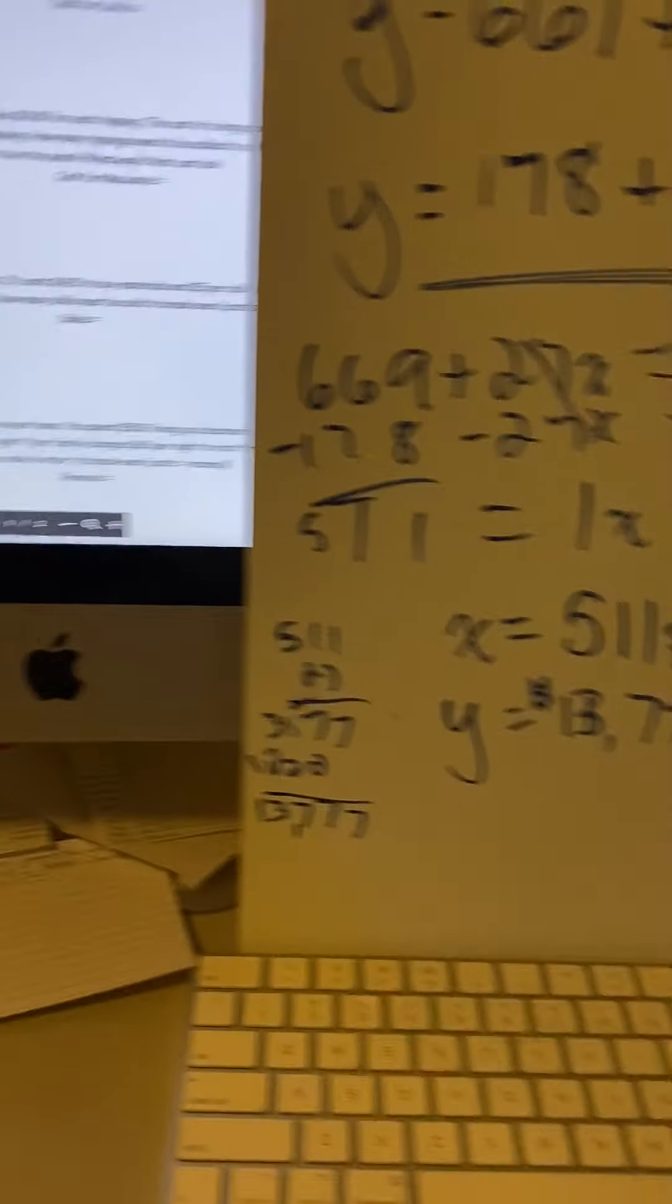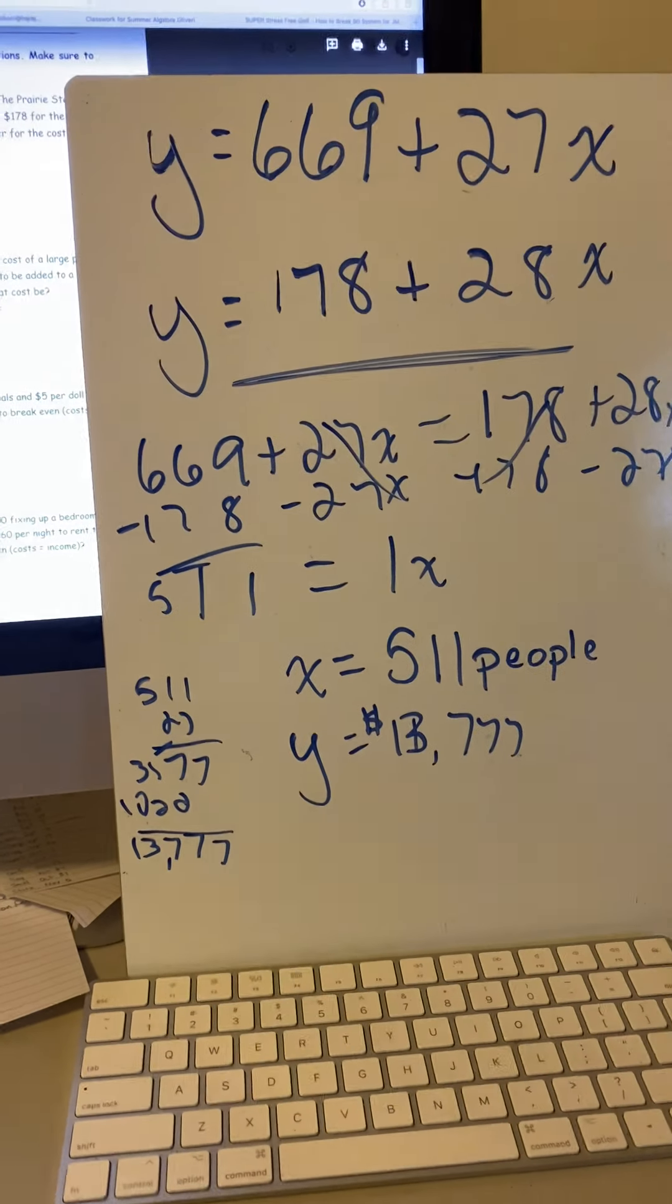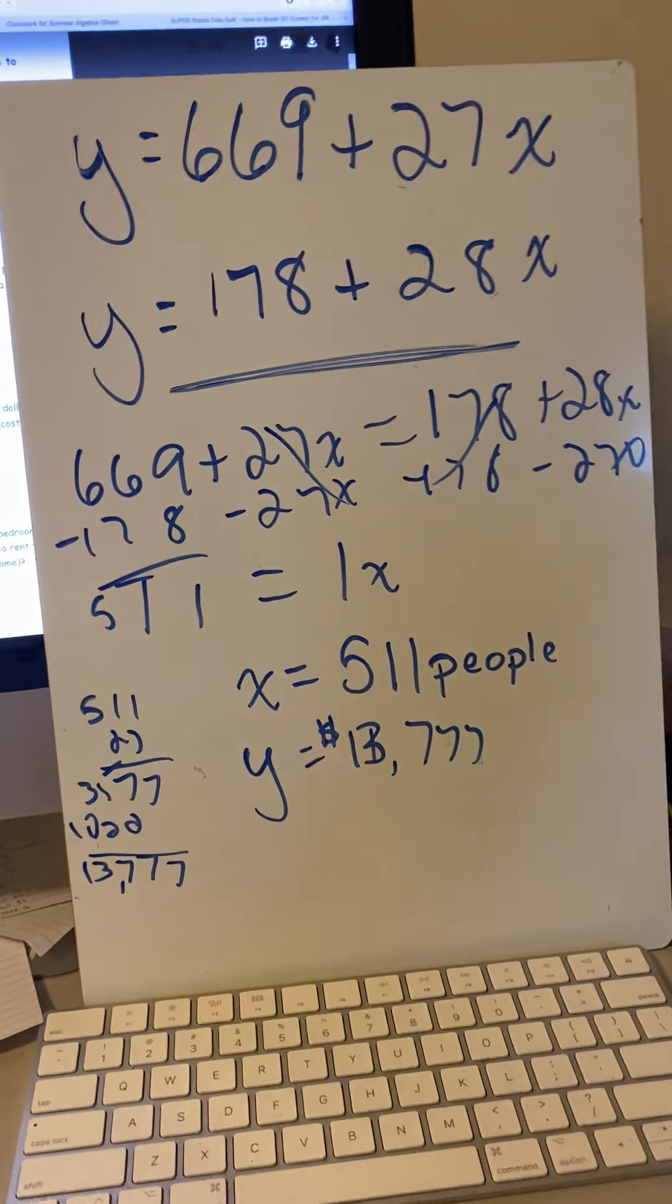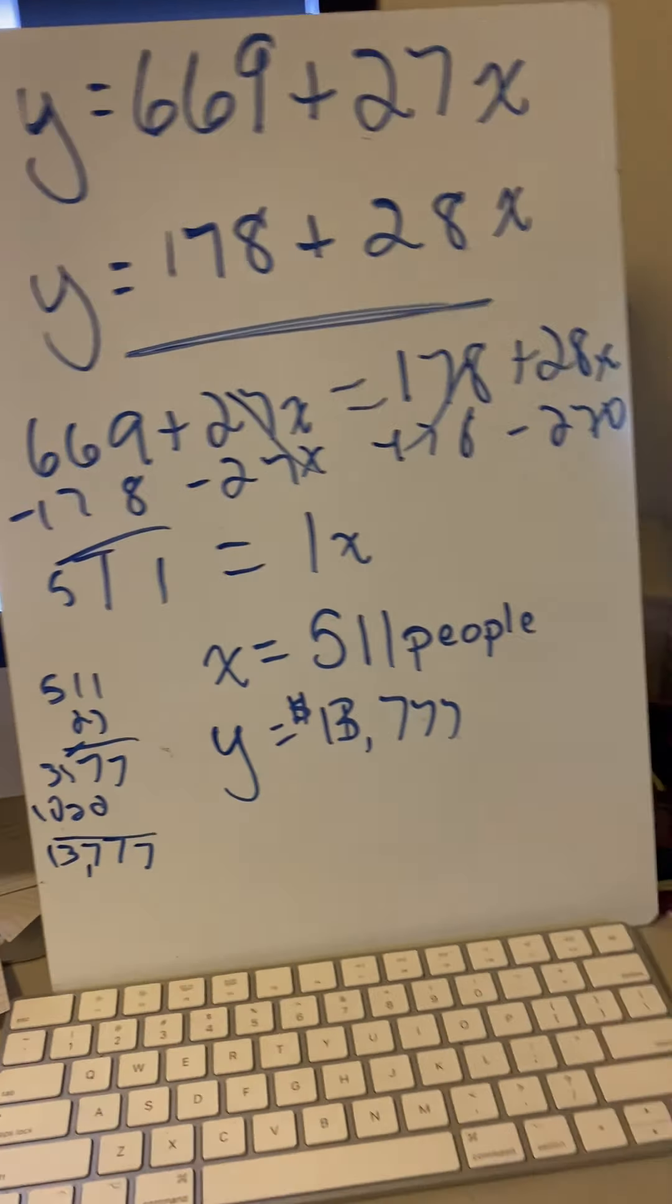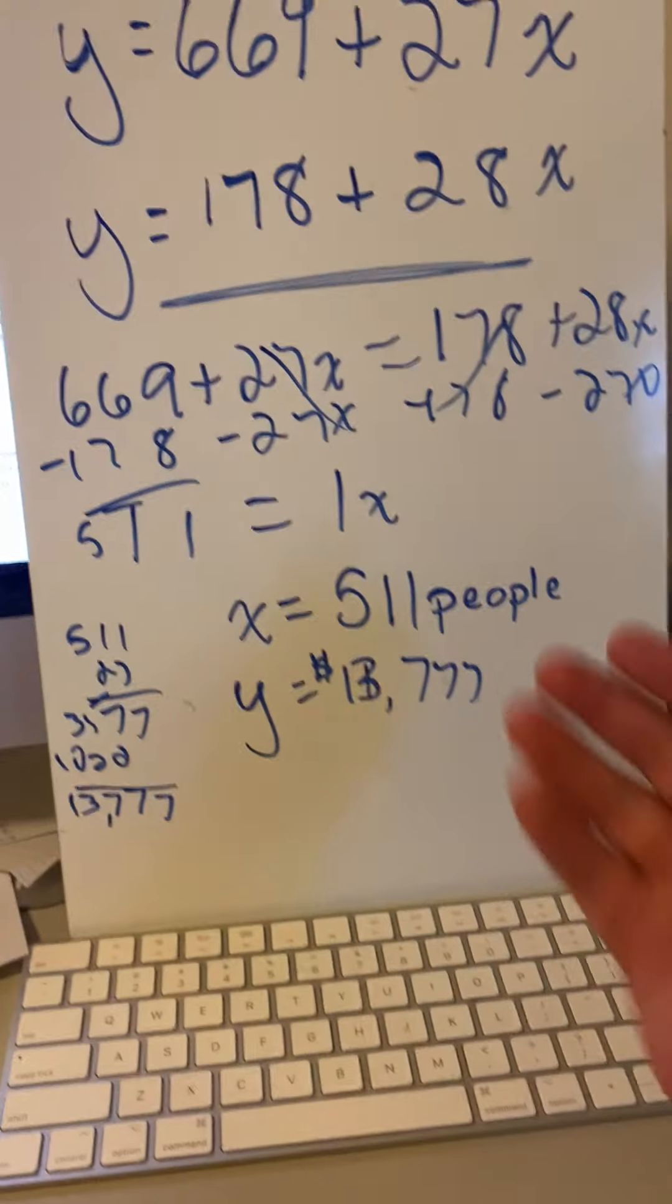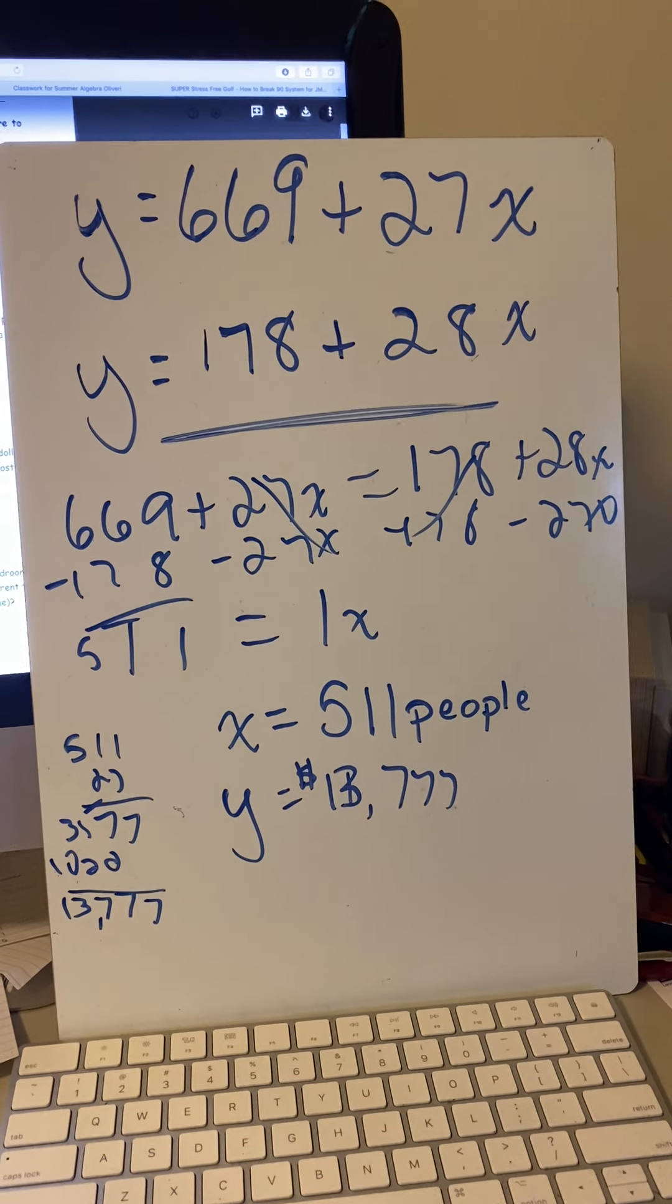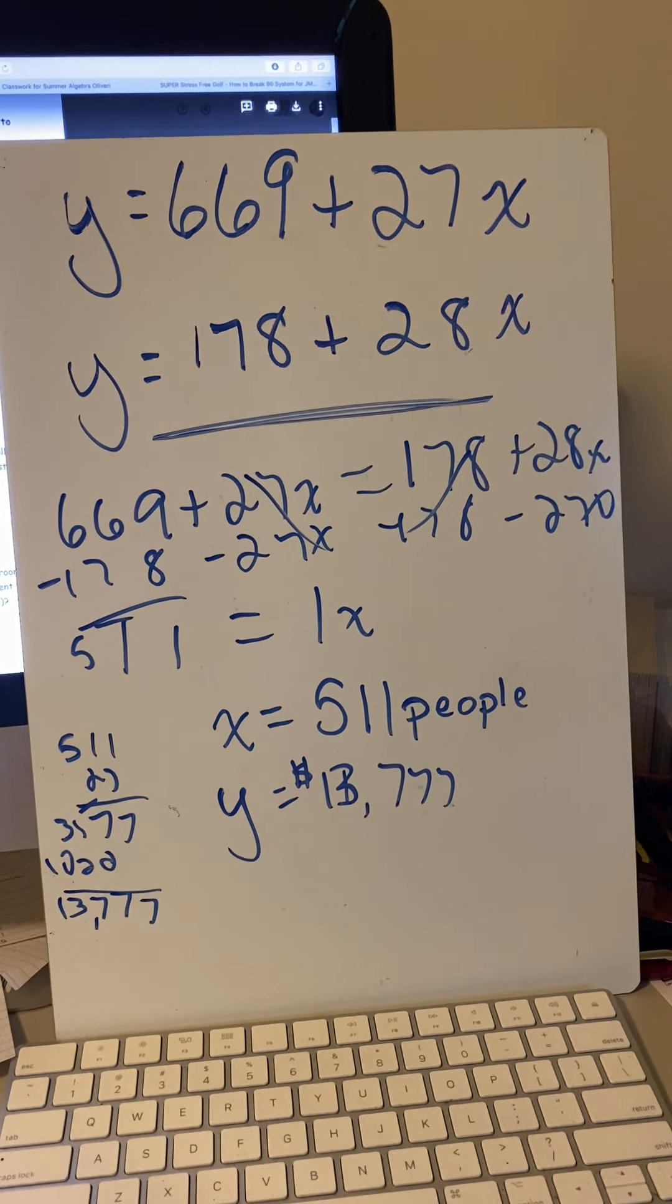That's how businesses use systems of equations. They use it a lot for cost effectiveness to see how much am I going to have to sell before I start making a profit, or how many people am I going to have to get to come before I break even or before this place is better than that place. This is typical stuff - it's business class 101, the very basics of business and economics.